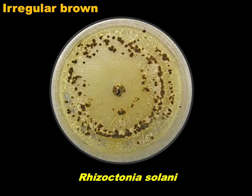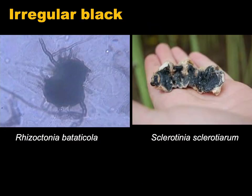Rhizoctonia solani, which is a very dangerous soil-borne organism with a huge number of host ranges, produces irregular brown sclerotia either in infected plant parts or in artificial media. Rhizoctonia bataticola and Sclerotinia sclerotiorum always produce irregular black sclerotia. By producing this type of structure, they can survive in crop debris or in the soil for many years, and when they face favorable environmental conditions, they germinate and start attacking the susceptible host crop.